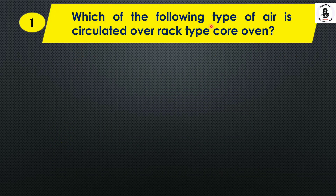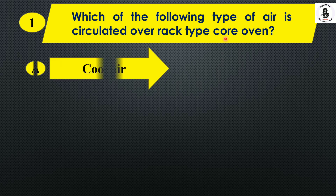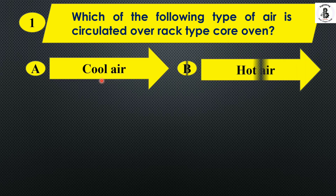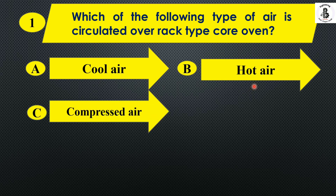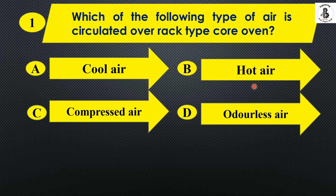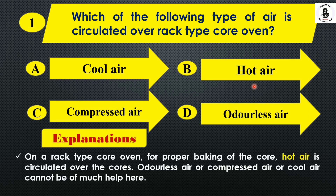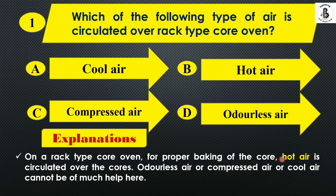Question number 1: Which type of air is circulated over a rack-type core oven? Option A: cool air. Option B: hot air. Option C: compressed air. Option D: odorless air. On a rack-type core oven, for proper baking of the core, hot air is circulated over the cores. Cool air, compressed air, or odorless air cannot be much help here. So the right answer is hot air, Option B.